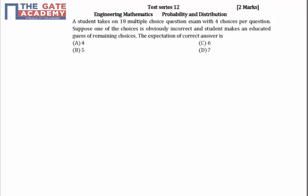This is a 2-mark question from probability and distribution. There are 18 questions with 4 multiple choices each. Given that these 18 questions will obviously have one choice that is incorrect.